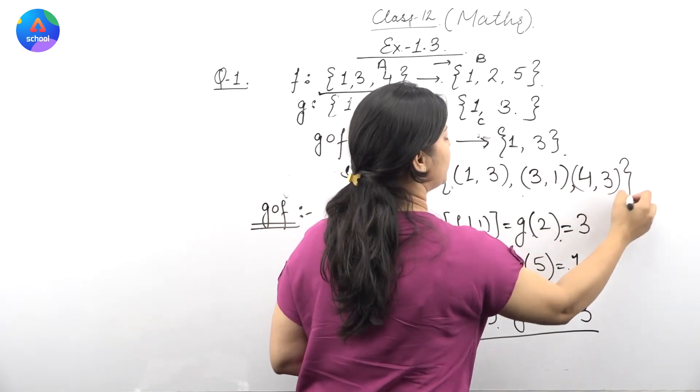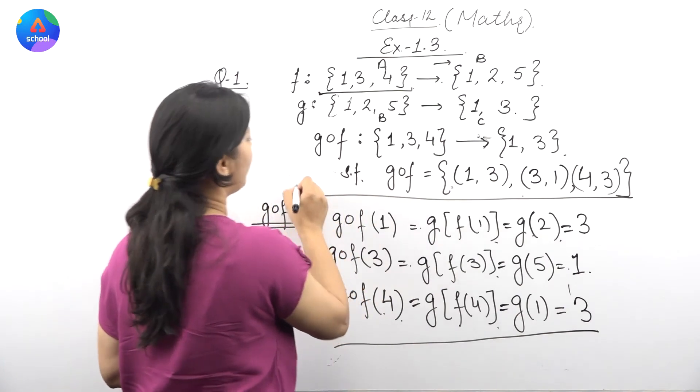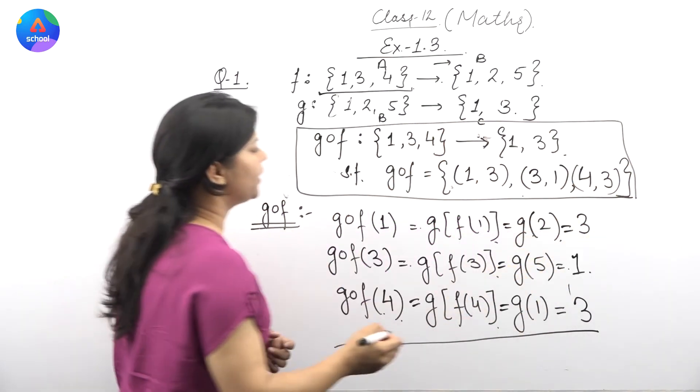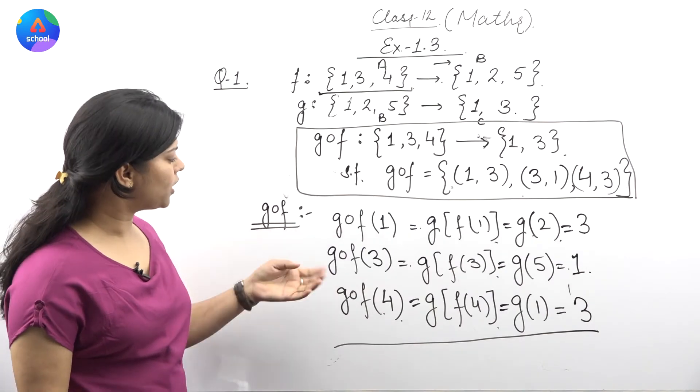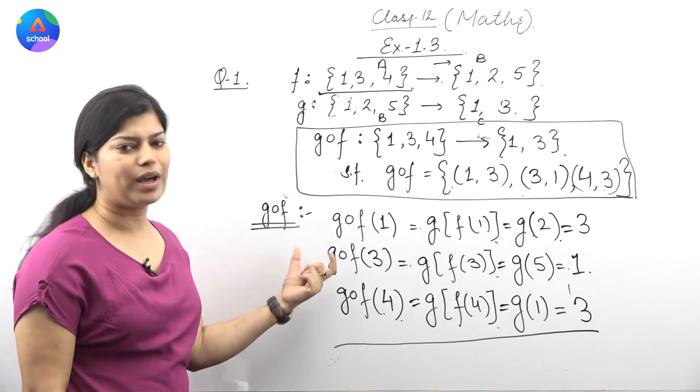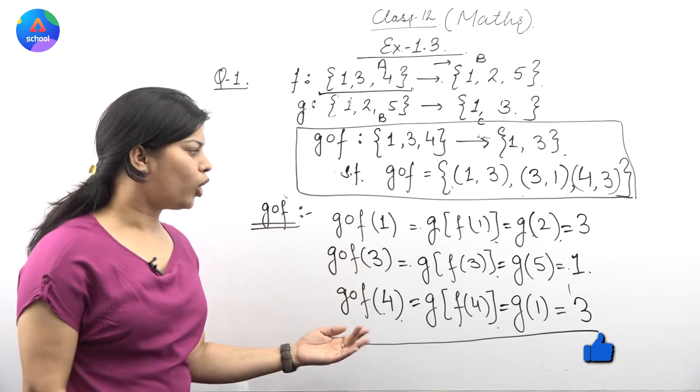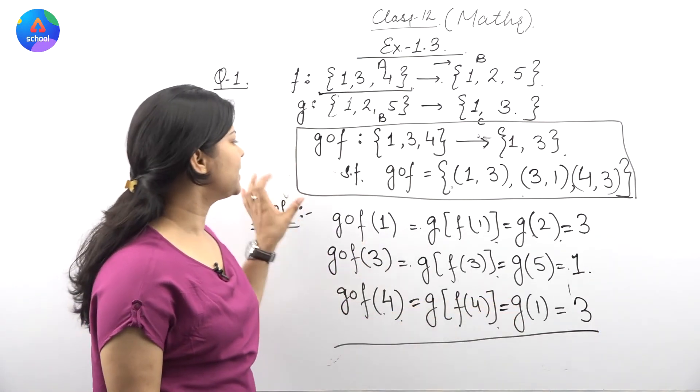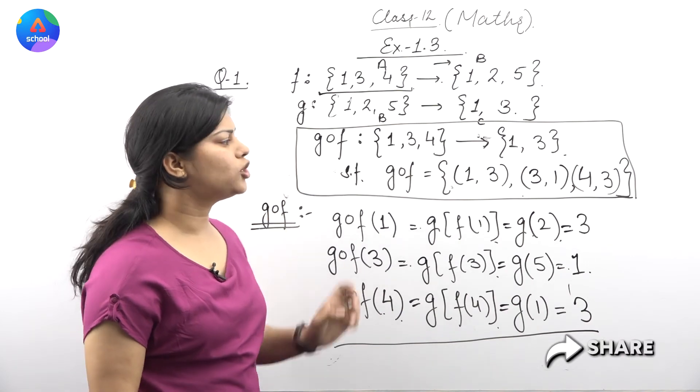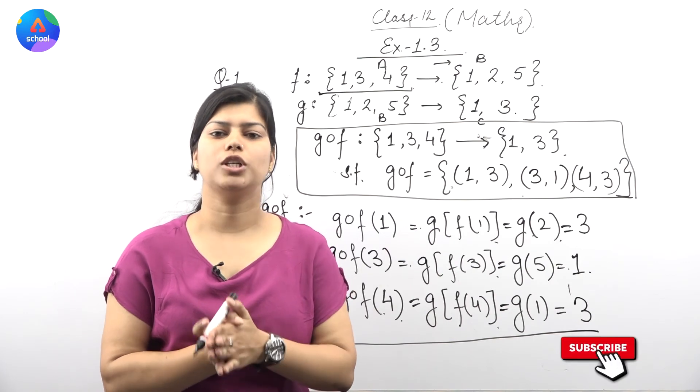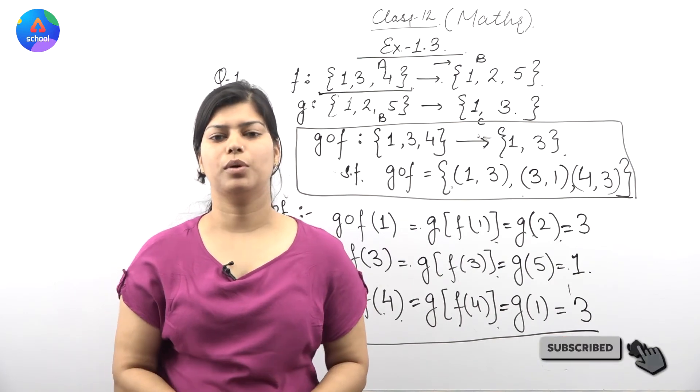So this is our g∘f that we needed to find out in this question. Basically, we needed to find this, and this is how we applied g∘f to each element one by one and found its image. This gave us g∘f, the composition function of functions F and G.